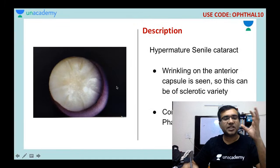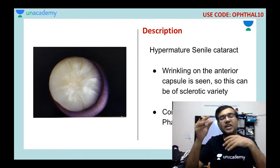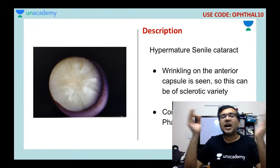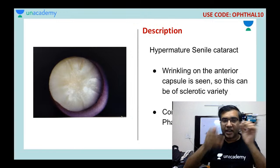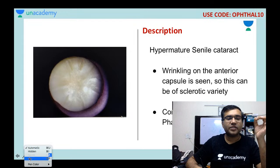This picture shows a hypermature senile cataract. The stages of senile cataract progress from lamellar separation, incipient, immature, mature, to hypermature. In the hypermature senile cataract, the density is so great that you cannot see inside; there is also wrinkling of the anterior capsule visible. This is the sclerotic variety of hypermature senile cataract.